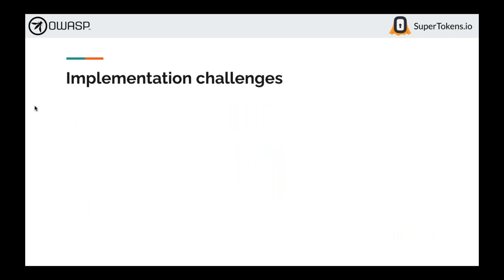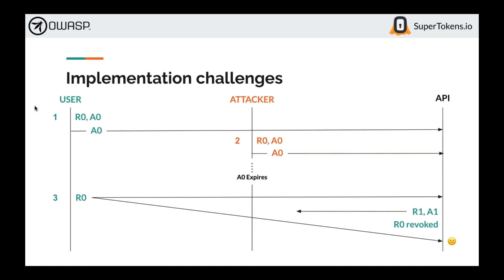The challenges come in implementation. One challenge is parallel requests to the refresh API. If the user uses R0 multiple times simultaneously, one request will revoke R0 and the other will trigger a false alarm of token theft. This can happen at application startup, when multiple valid API requests fire after the access token expires, potentially leading to multiple calls to the refresh API and false positives.